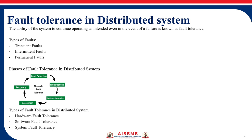Next we have intermittent faults. This type of fault occurs irregularly and is often difficult to reproduce or predict. They may be caused by unstable hardware conditions, temperature variations, timing issues, or sometimes software bugs, and they can appear or disappear without any apparent changes.